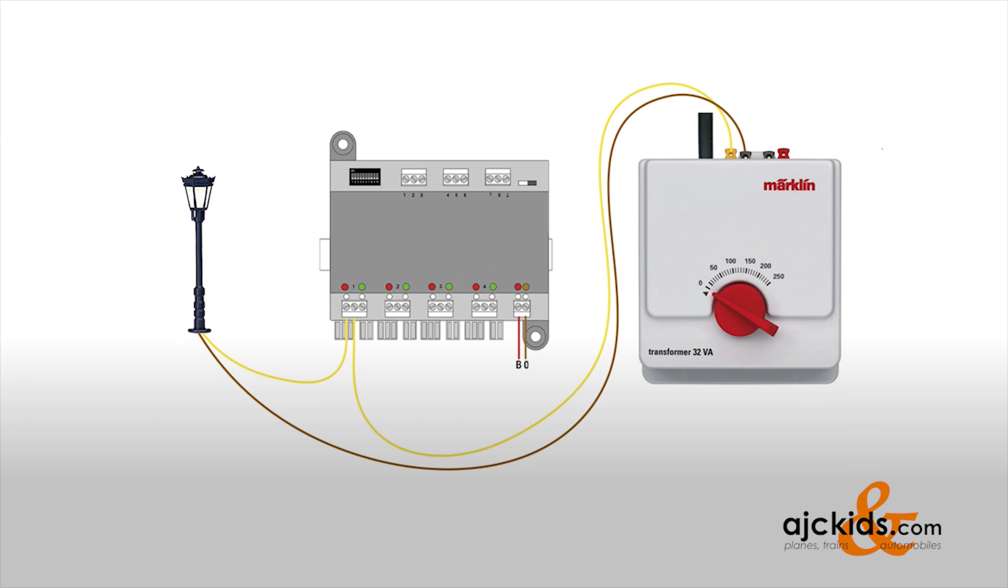So if we power up the decoder, you see that the light does not come on yet because right now we have this side of port number one powered. And then if we would switch port number one, then the light would come on. And again, if we switch it back, light goes off.